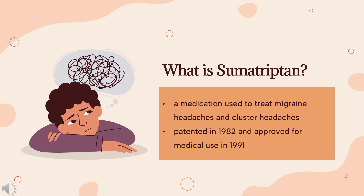In 2020, it was the 111th most commonly prescribed medication in the United States, with more than 5 million prescriptions. It is also available as the combination product sumatriptan/naproxen.